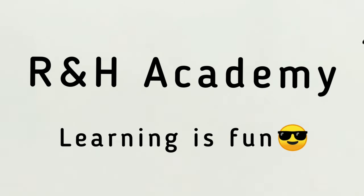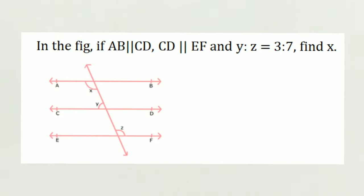Welcome to our H Academy channel. Question 2 of Exercise 6.2 says, if AB is parallel to CD and CD is parallel to EF and Y's ratio to Z is 3 ratio 7, find X. So, let's do it.